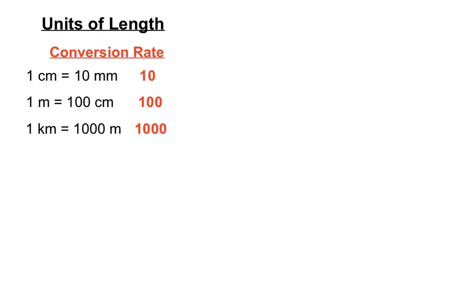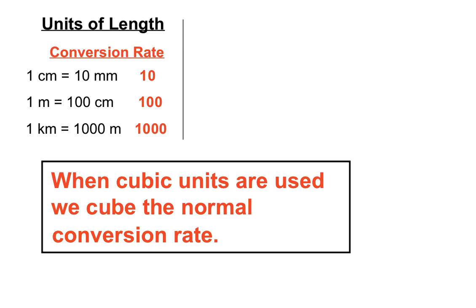We'll compare units of volume to the units of length and the conversion rates we had there. One centimeter equals 10 millimeters, so the conversion rate is 10. The conversion rate between meters and centimeters is 100, and between kilometers and meters is 1000. When cubic units are used, we actually cube the normal conversion rate. It's a good thing to remember: when we're using cubic units, we cube the normal conversion rate.